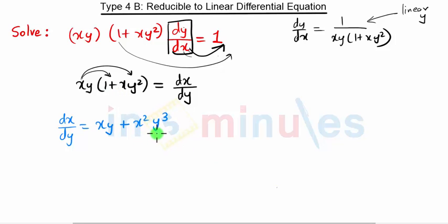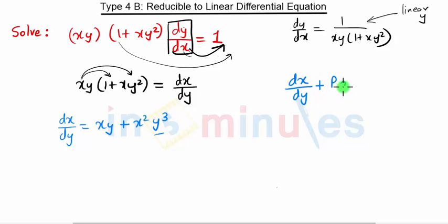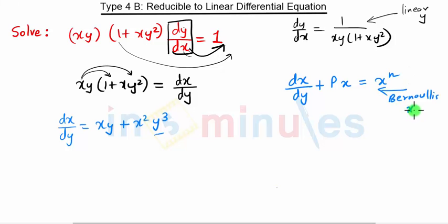As you can see, we have y raised to some power, so this is nothing but Bernoulli's equation, which can be represented as dx/dy + P·x = x^n. This is the Bernoulli's equation in x.